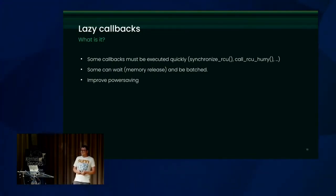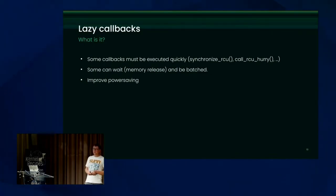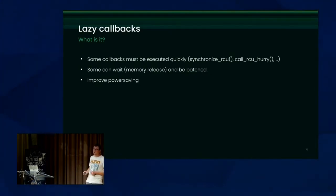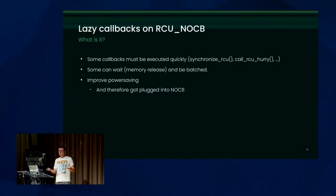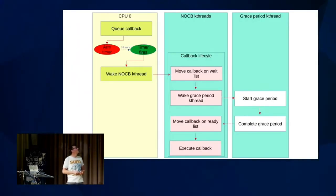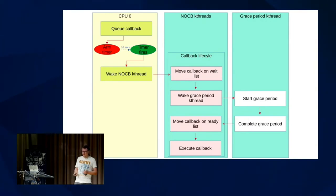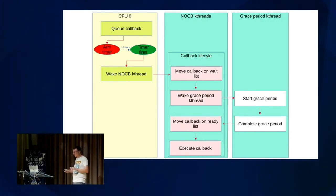The point of lazy callbacks: because you can wait for them to be executed — several seconds — that improves power saving, because the CPU can go to sleep when it has callbacks queued, and it can defer the wake-up of the no-CB kthreads. It has been implemented on offloaded callbacks only. Here's how it looks: CPU 0 queues the callback, arms a timer waiting 10 seconds. The timer fires and wakes up the no-CB kthread, which in turn wakes up the grace period kthread. Lots of levels of indirection, but you get the idea.